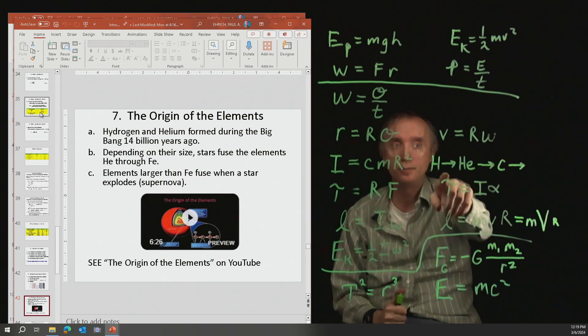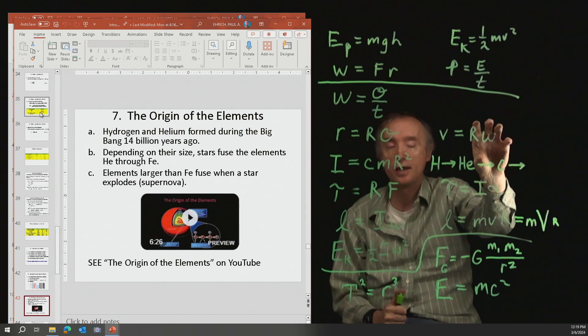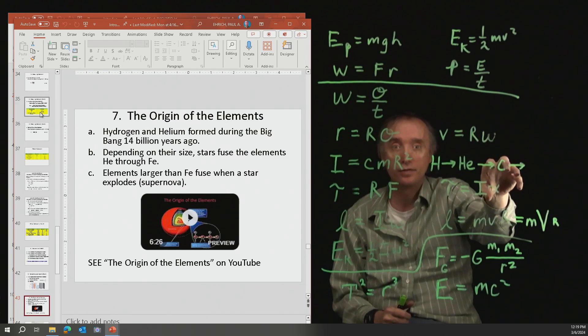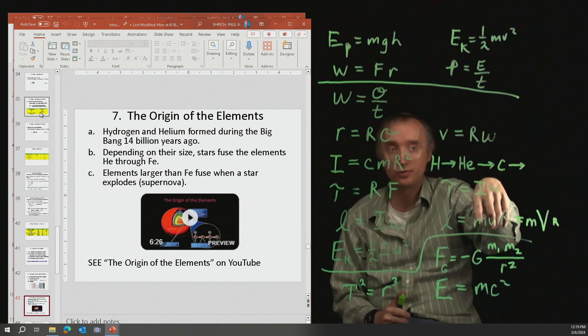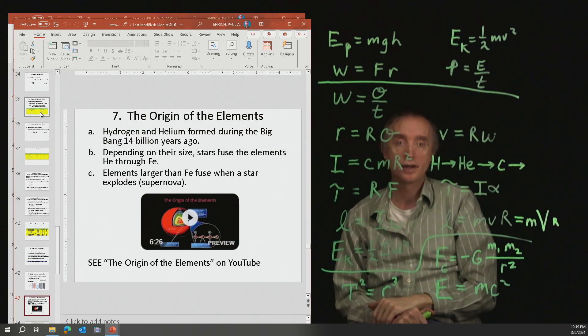The elements up to iron are created as a star is dying. And then, through the supernova explosion, you created the elements larger than iron on the periodic table.